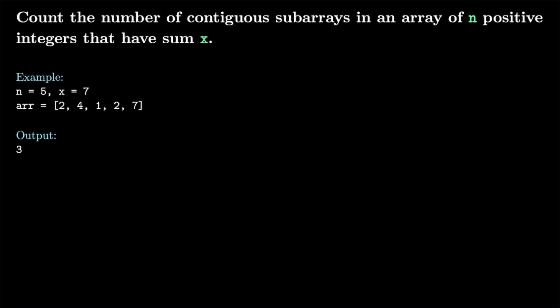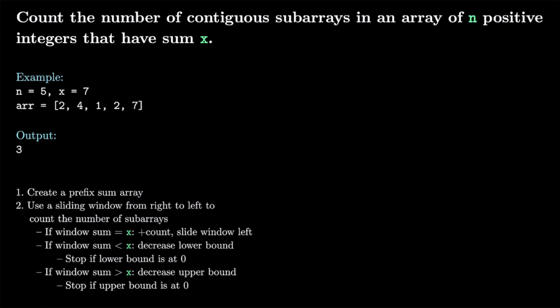Now how do we go about solving this? First, we're going to create a prefix sum array — that helps us calculate sums without recalculating each range every time. Then we'll use a sliding window going from right to left, with a lower bound and an upper bound. Using the prefix sum array, if the window sum equals x, we increment our count and slide the entire window left — decreasing both the lower and upper bounds by 1.